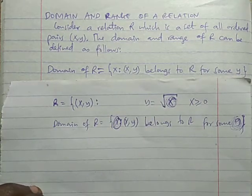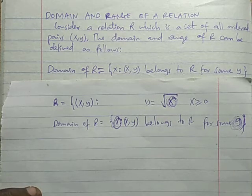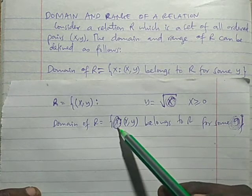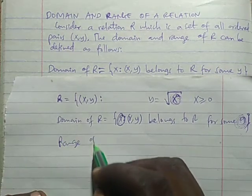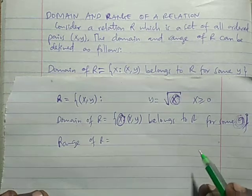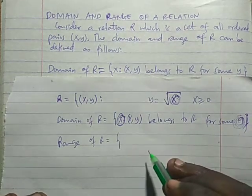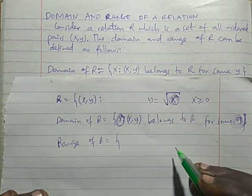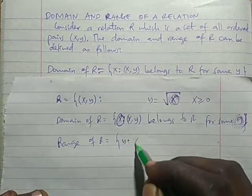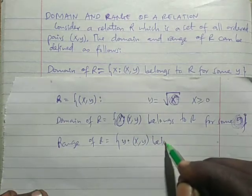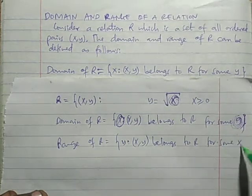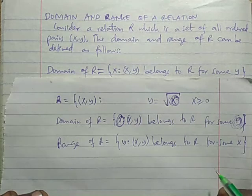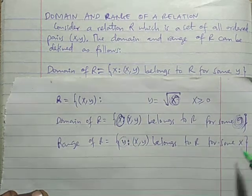But it is possible to get the square root of 0 or any positive number. So in an easier way, domain ni values za X ambazo zinaweza kutupa Y. And range of a relation R ni values za Y ambazo zinaweza kutupa X — Y values for which there exists some X such that (X, Y) belongs to R.